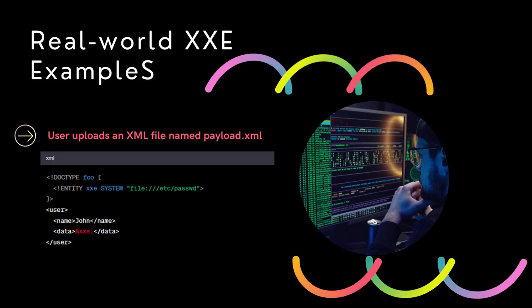Let's talk about a real-world XXE example. In a real-world scenario, attackers can exploit this vulnerability to read files, execute internal requests, or perform other malicious actions. Suppose there is a web application that allows users to upload XML files and then displays information from those files on a user dashboard. The application uses the uploaded XML to process and display user-specific data. The user uploads an XML file named payload.xml containing a malicious external entity reference pointing to the password file on the server. When the application processes payload.xml, it blindly resolves the external entity reference, which points to the /etc/passwd file on the server, and displays its content on the user's dashboard. In this scenario, the attacker has effectively retrieved sensitive system information — the contents of the /etc/passwd file — by exploiting the XXE vulnerability.